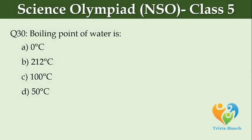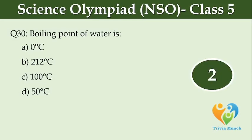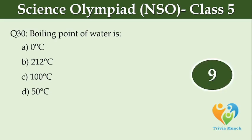Boiling point of water is dash. Option A: 0 degree Celsius, Option B: 212 degree Celsius, Option C: 100 degree Celsius, Option D: 50 degree Celsius.